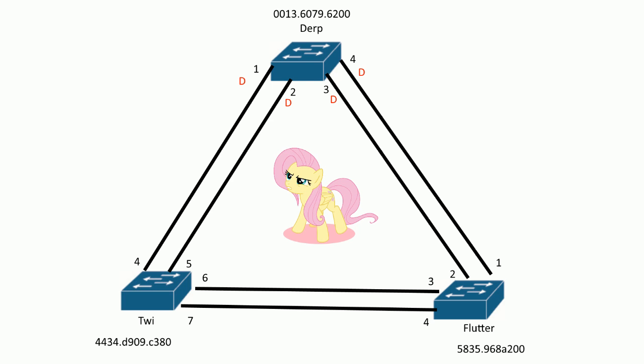Next we need to find the root ports. But in order to understand that, we have to look carefully at how we add the cost to the ports here. You don't just say everything is 19 because the link is fast ethernet — that's going to get you into a little bit of trouble with assigning port roles. So first you need to look at the link and what the port sees it as.